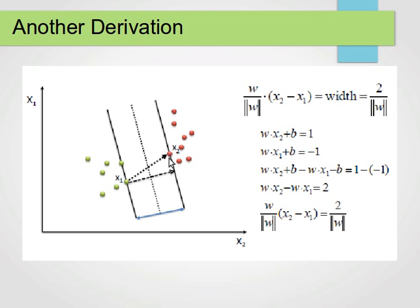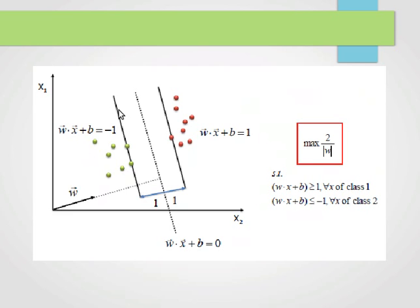That's the distance between the two closest support points — that's the width of the margin. The idea now becomes: we want to maximize that margin. Maximizing two over the magnitude of w means we want to minimize |w| or equivalently maximize 2/|w|.